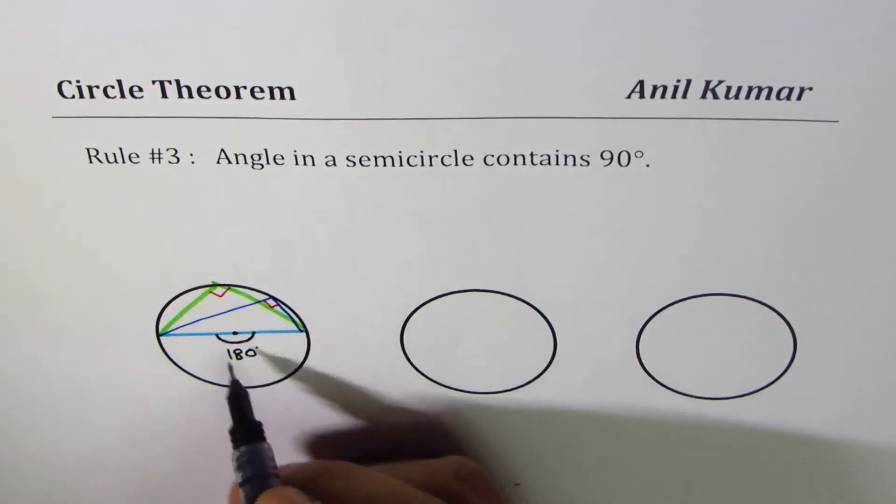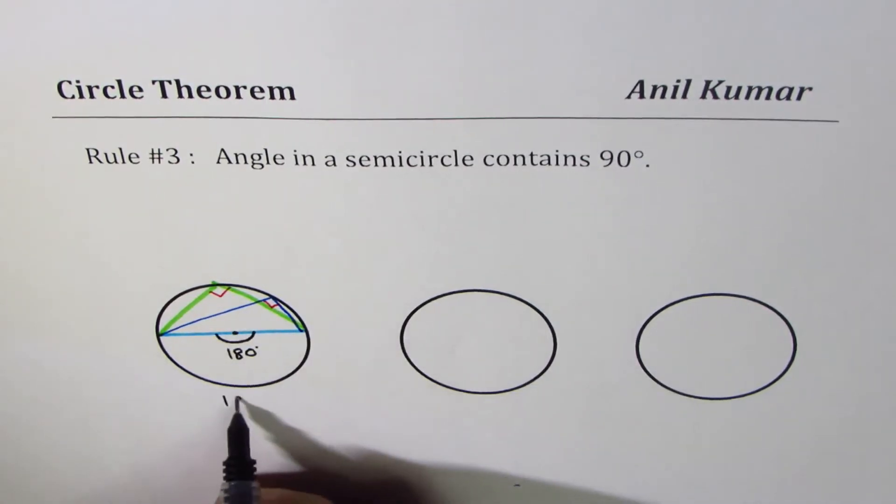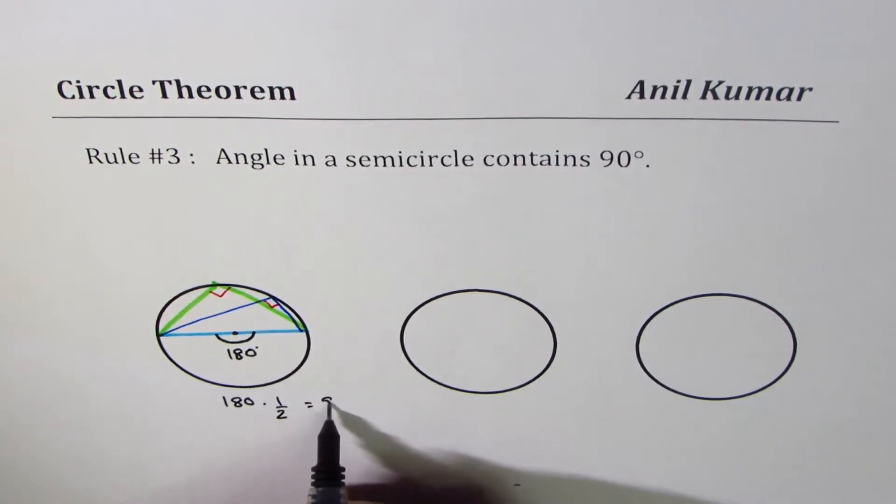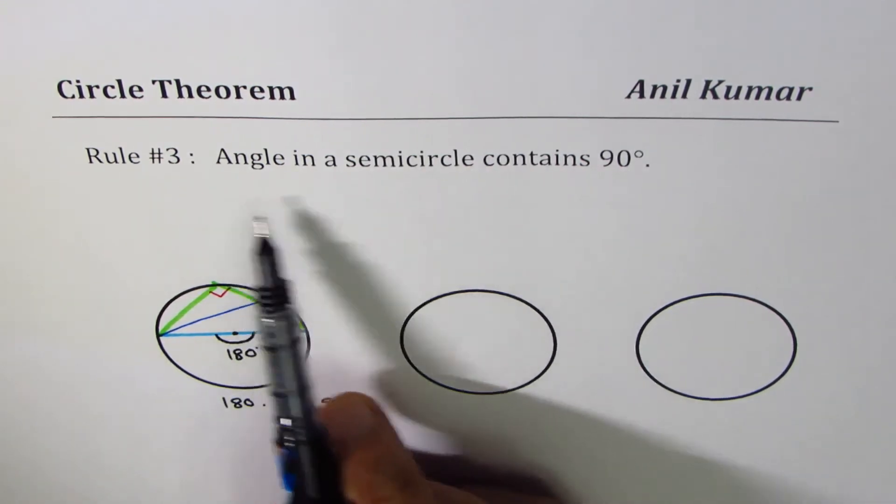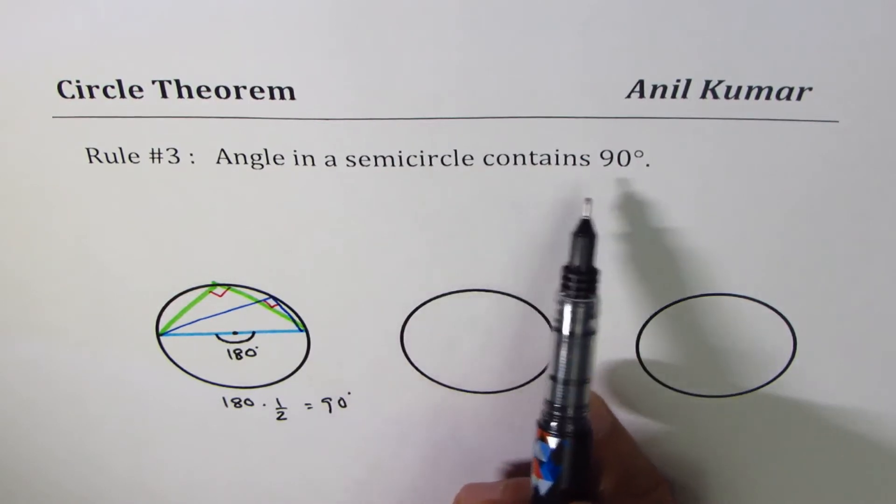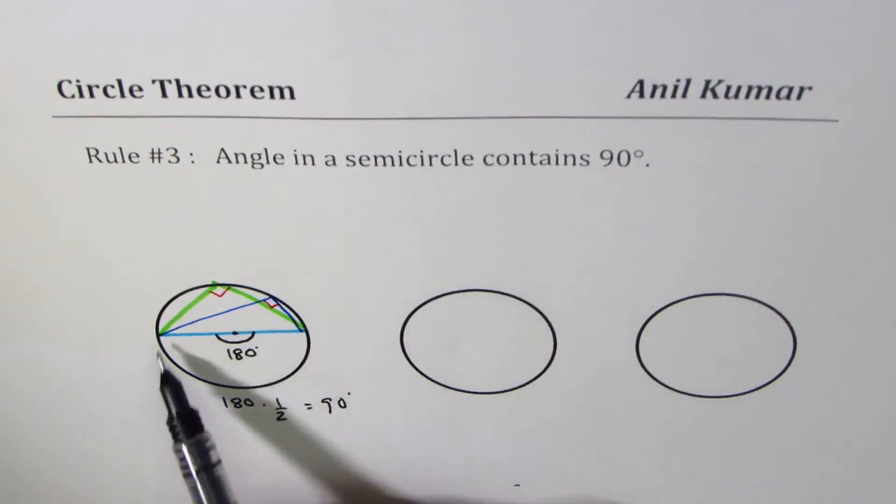So if the angle is 180 degrees, which is the case for the diagonal, half of 180 degrees equals 90 degrees. So from the previous rule, which we called rule number two, we can conclude that in a semicircle any triangle formed will be a right triangle.